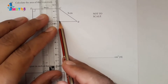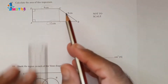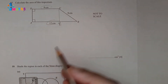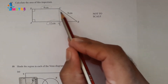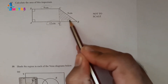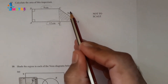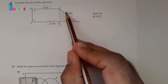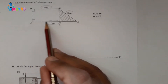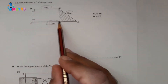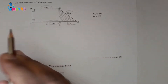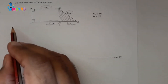What we can do is join C with point E, marking this point as E. Now we will apply Pythagoras' theorem on this shaded triangle. The hypotenuse is 8 centimeters and the base EB will be 12 minus 8, which is 4 centimeters.